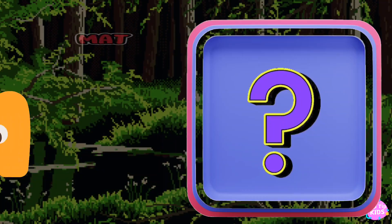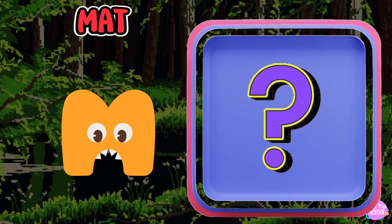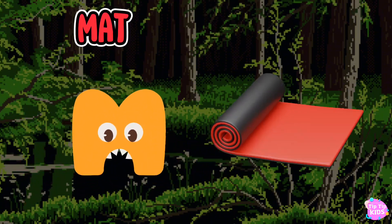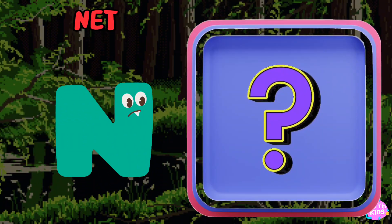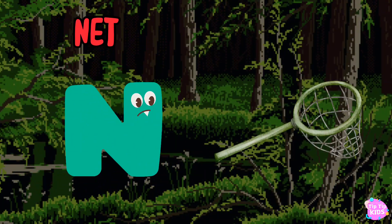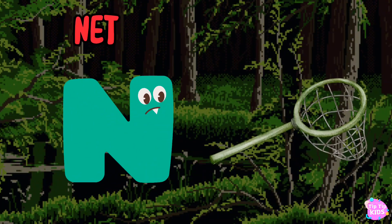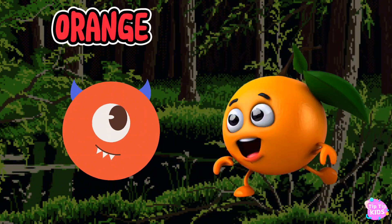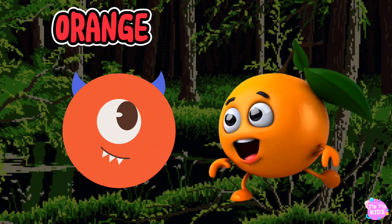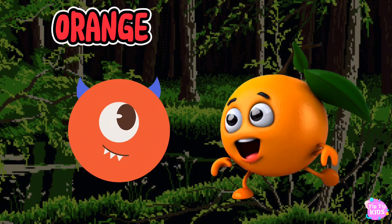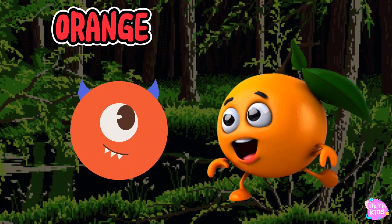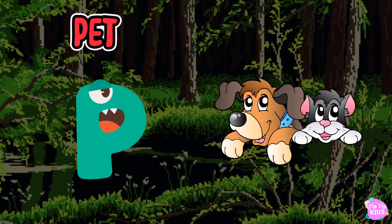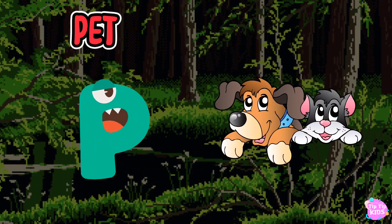M is for mat, m-m-mat. N is for net, n-n-net. O is for orange, o-o-orange. P is for pet, f-f-pet.